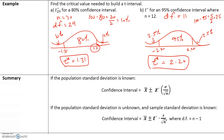Here's a summary: if the population standard deviation is known, we use the normal distribution to find Z-star, the critical value. If the population standard deviation is unknown — which happens in most cases — and we can calculate the sample standard deviation, then we use the t critical value. We use the t-distribution to find the critical value, where degrees of freedom equals n minus 1.